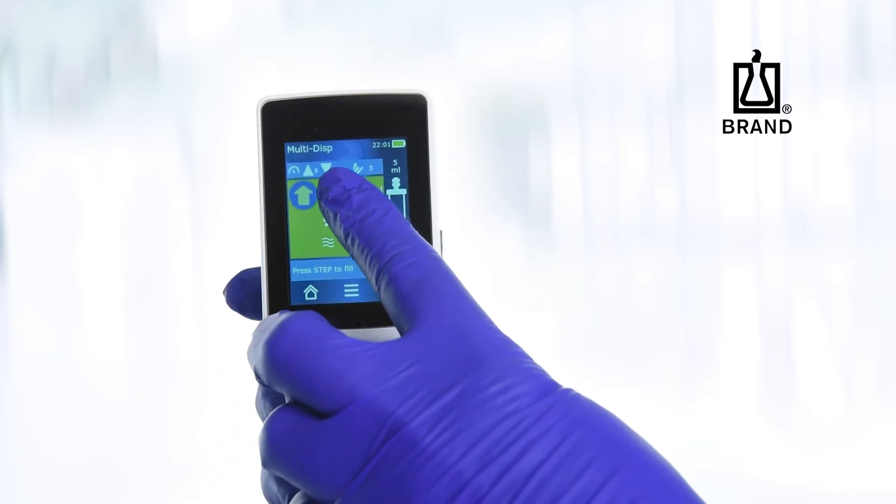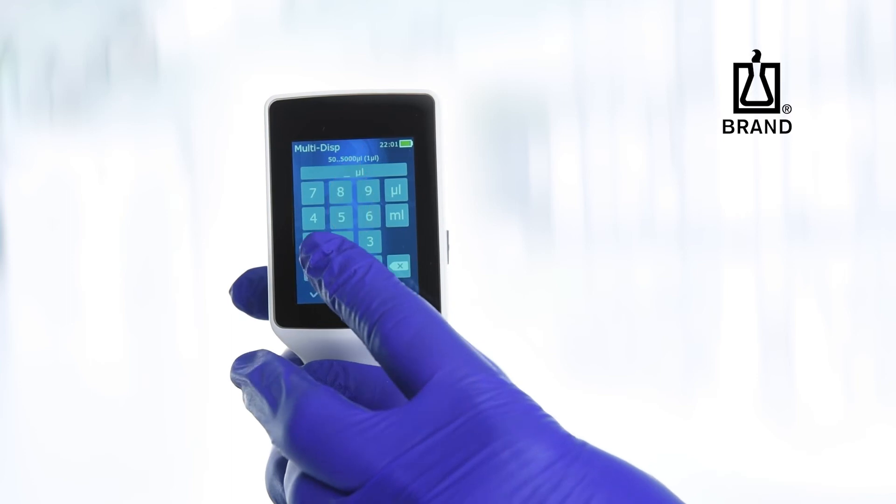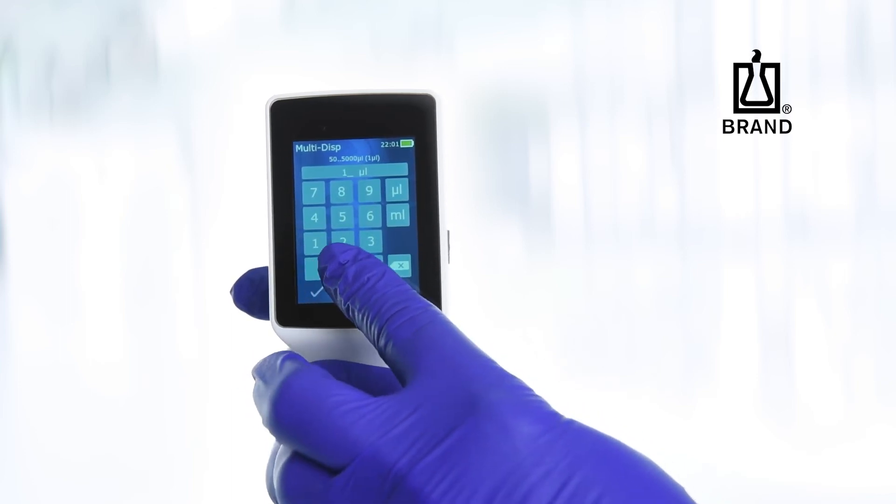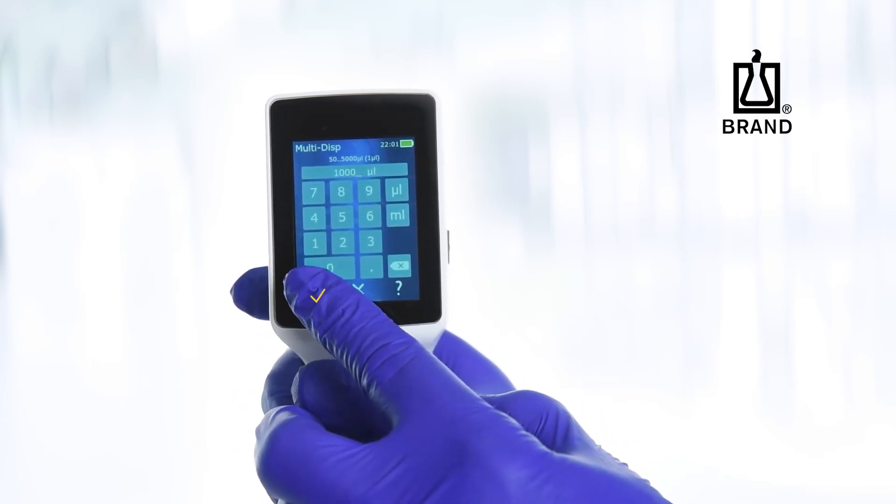To set the desired dispensing volume, tap on the water droplet icon. Type in the desired dispensing volume using the keypad, then tap to confirm.